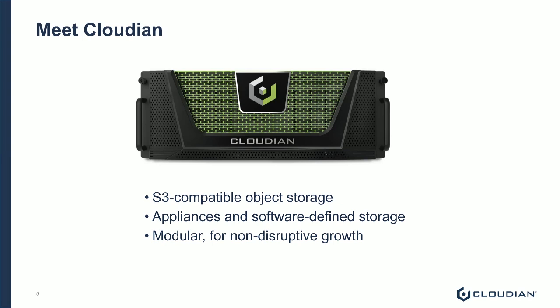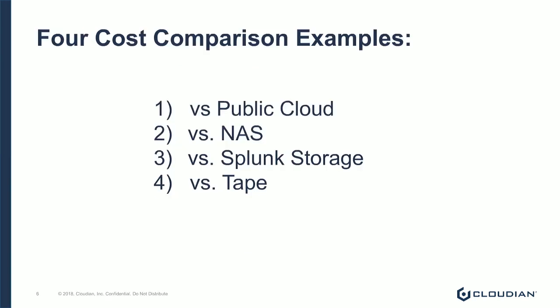I think what we've got to talk about here would be some specific examples of exactly what you're saying. And just to set the stage, I'm using Cloudian object storage as the target in these examples — S3-compatible storage. We are appliances and software-defined storage, and it's modular. But the important thing here is we've got some very specific examples on how this kind of storage system saves cost in several different usage scenarios versus public cloud versus just a traditional NAS system by itself.